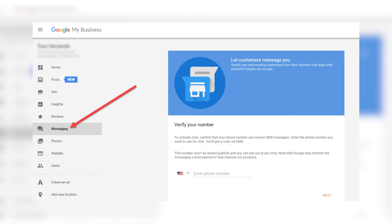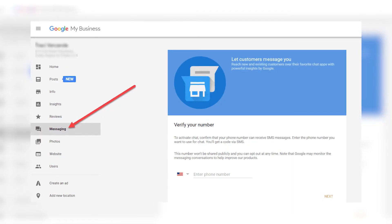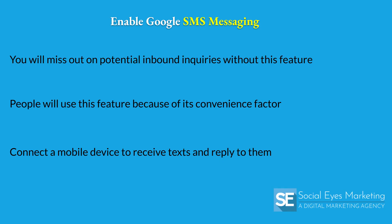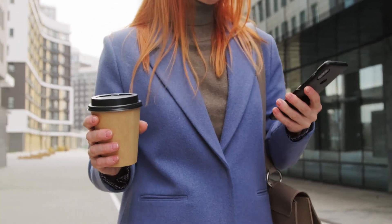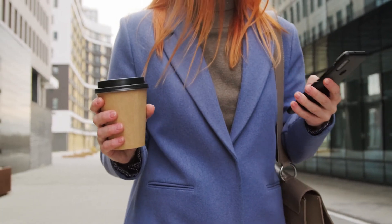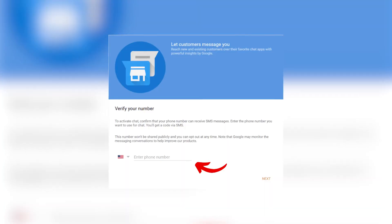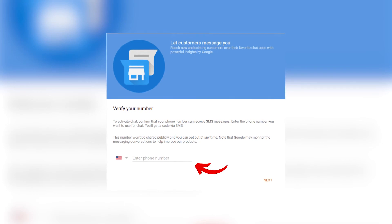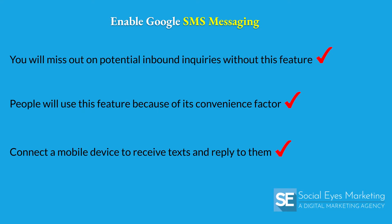Another thing to do is enable the Google My Business SMS contact option. This is a feature that many don't take advantage of. If you don't enable the SMS contact option, you'll miss out on potential inbound inquiries. People today use text messaging as a primary communication method, as it's more convenient than making a phone call. Enabling this on your Google My Business profile allows you to connect a mobile device to receive and reply to texts. Listings that have this option enabled will often draw more attention simply due to the convenience factor.